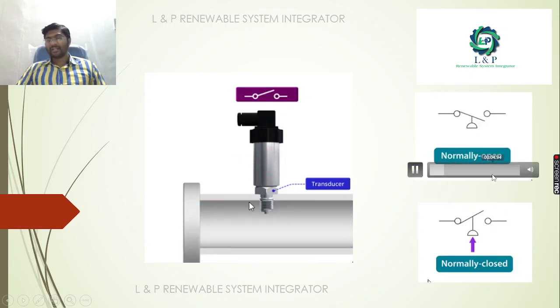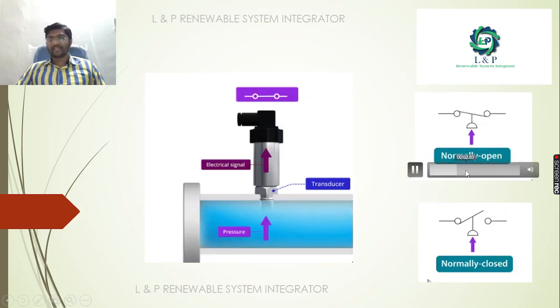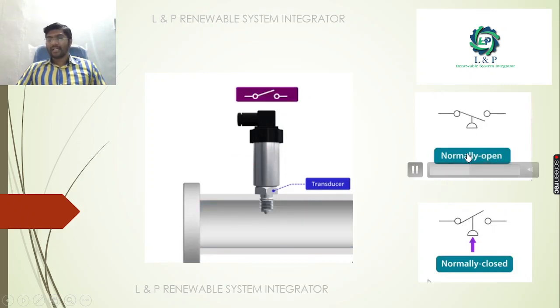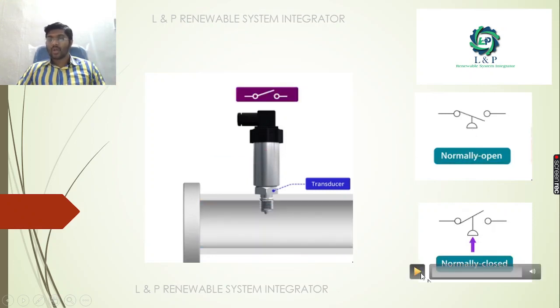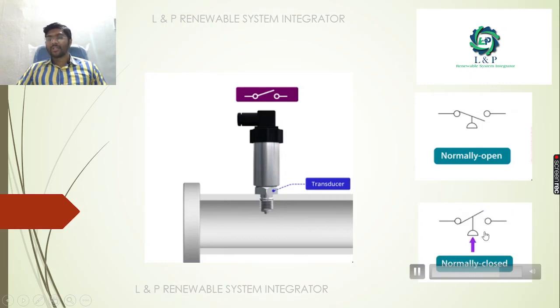Similar to a switch — when there is no flow, it won't operate. When there is flow, it changes its position from NO to NC. If connecting terminals in the normally open context, the switch is open at rest. If using normally closed context, it will be in closed position and change from NC to NO when pressure occurs.